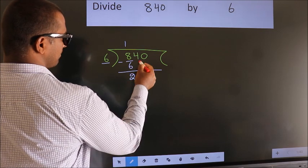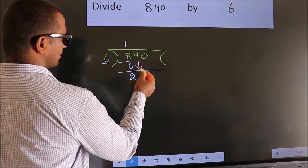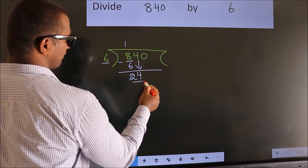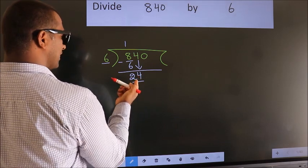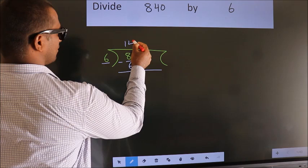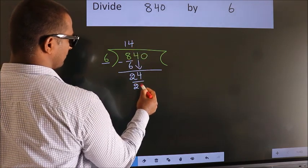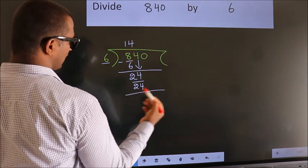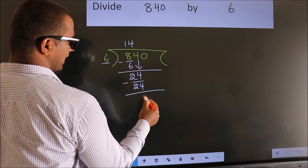After this, bring down the beside number. 4 down, so 24. When do we get 24? In 6 table, 6 times 4 is 24. Now, we subtract. We get 0.